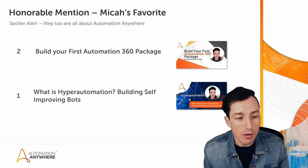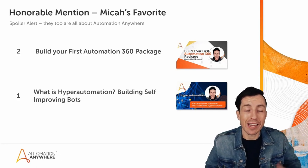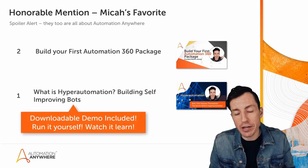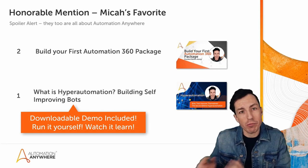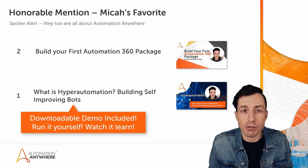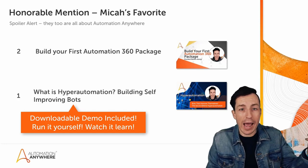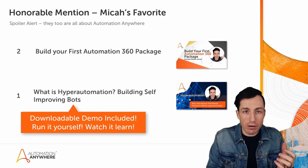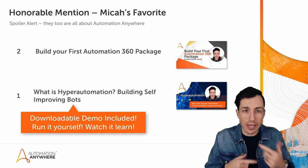Number one honorable mention is 'What is Hyper Automation: Building Self-Improving Bots.' One of my predictions for 2022 is that we're going to see a lot more intelligent automation or hyper automation. In this video we go through the process of talking about how a bot can actually get smarter from human input — a bot using a custom package that's leveraging a machine learning model, built as a process that includes AARI.